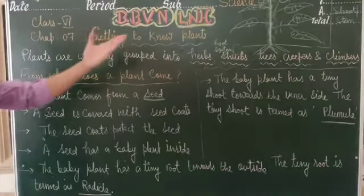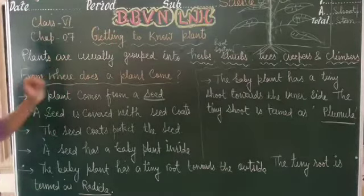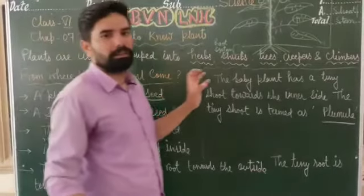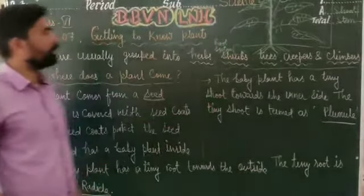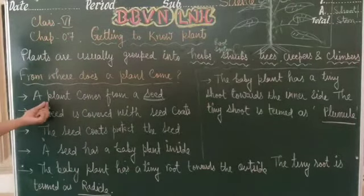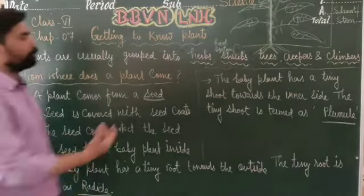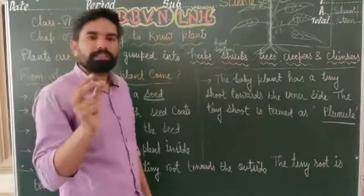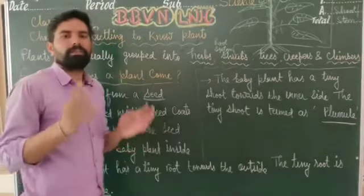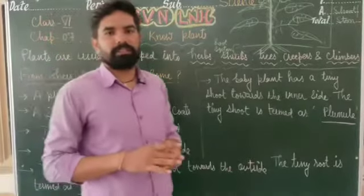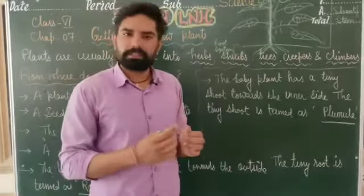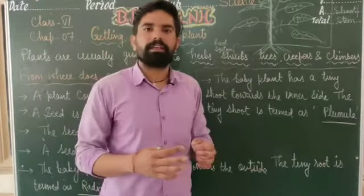अब बात करते हैं कि plant कहाँ से आता है — from where does a plant come? A plant comes from a seed। जो भी plant होता है वो seed से आता है। जब उसे favorable conditions मिलती हैं — जैसे water, minerals, humidity — तब plant grow करता है।